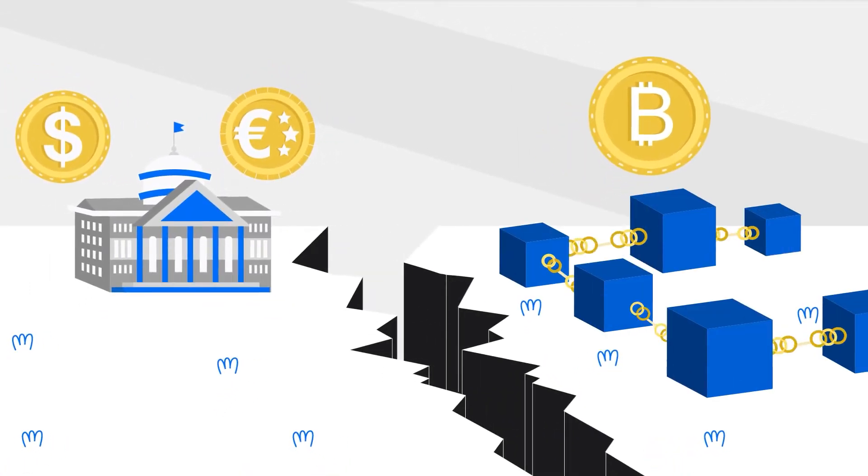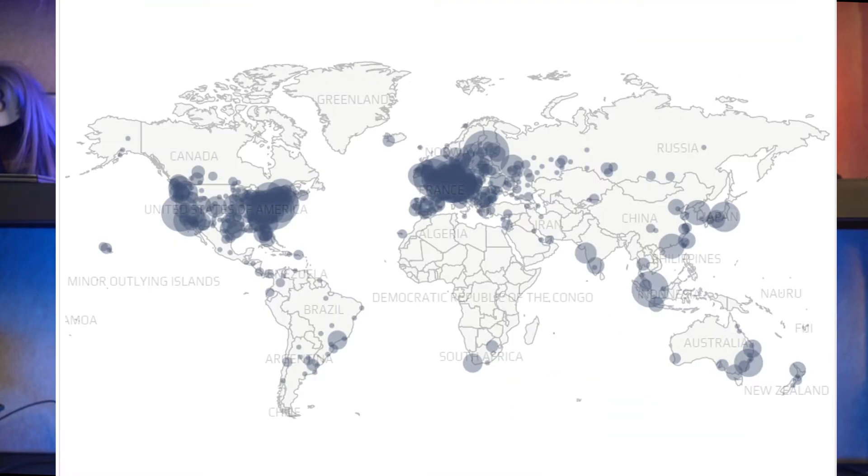Distributed ledger technology, or DLT, is considered the parent technology of blockchain. The infrastructure and protocols that form DLT allow for a digital system where users and systems could record, access, and validate information securely and immutably, or unchangeably. A digital system built with DLT is decentralized, as the information is stored across multiple entities in different locations. The security and immutability of the system are achieved via public and private keys, which act as cryptographic signatures.